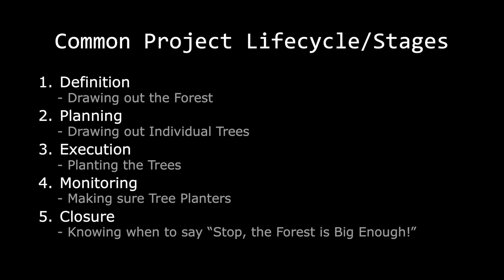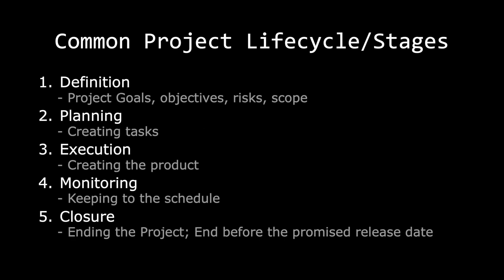Think of project life cycles as creating your own forest. Before you create your own forest, you must first draw out on paper how you would like the forest to look. After you've drawn out the forest, you then draw what your individual trees will look like. Once you've finished drawing all the individual trees, you move on to execution, which is basically planting your trees. While people are planting trees, you must monitor to make sure all your tree planters are keeping to schedule. And lastly, to finish the project you have to know when to say stop — the forest is big enough, we are done.